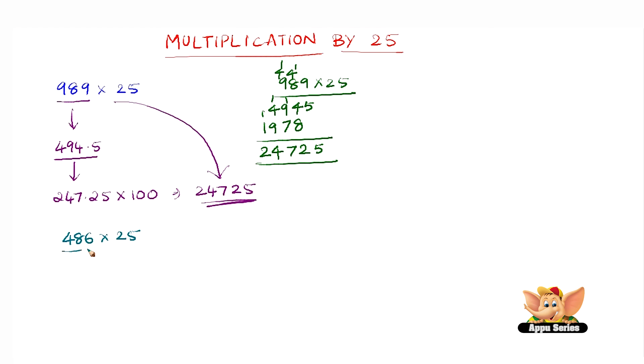So quickly find the half of 486, which is nothing but 243, and again find the half of 243, which is nothing but 121.5, and multiply 121.5 by 100. So 121.5 into 100 gives us 12,150, which is the answer of 486 into 25.